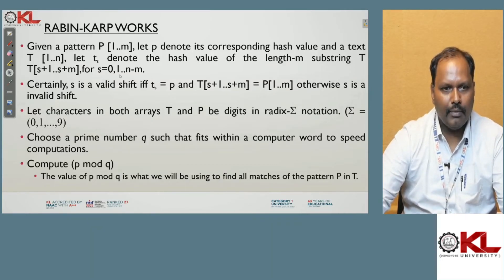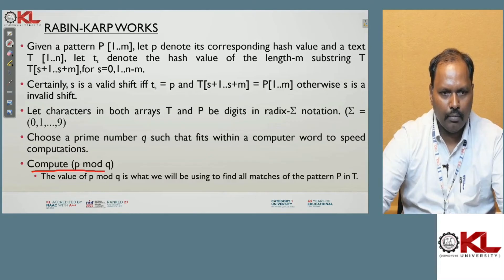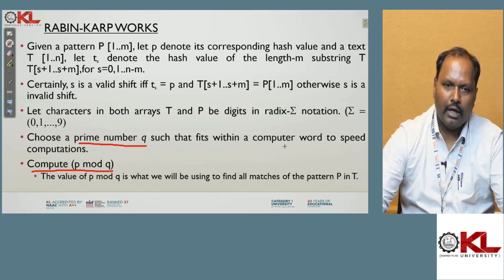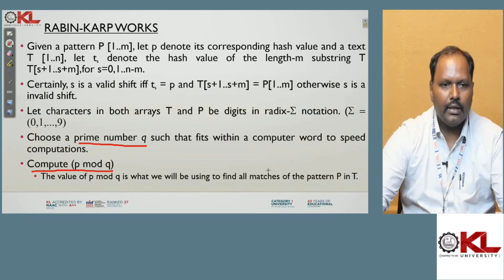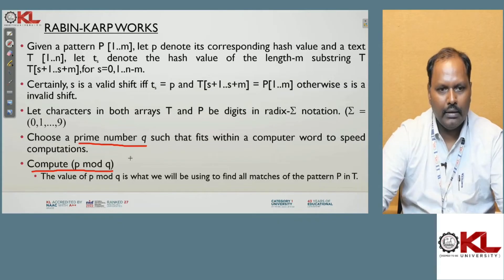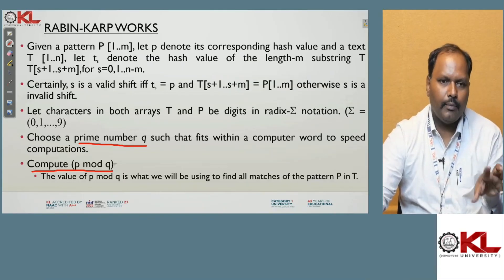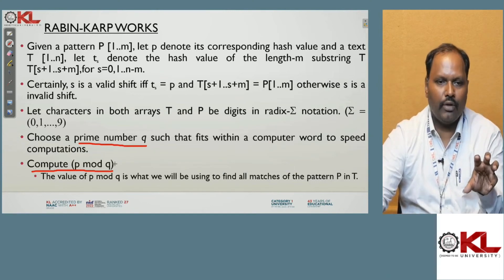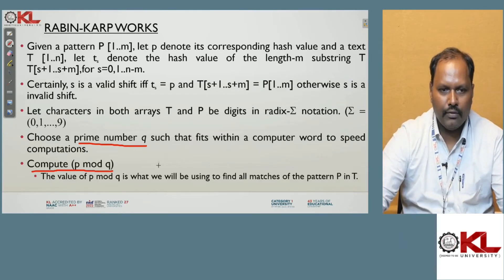The Robin-Karp pattern matching algorithm uses the same text window T[s+1 to s+m] and pattern P[1 to m], but with one key difference: computation of P mod Q, where Q is a chosen prime number. Robin-Karp can work with numbers, and the condition is: Q must be a prime number, and we compute P mod Q — where P is the pattern and Q is the mod value — then compare with the text.